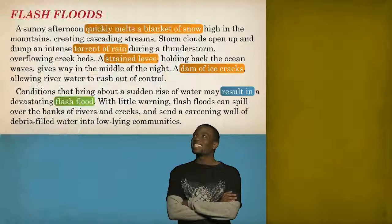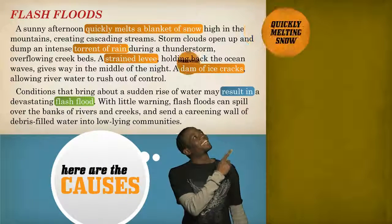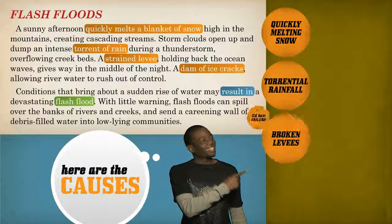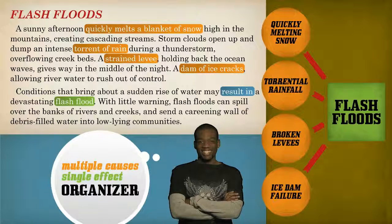My graphic organizer of this passage's text structure would look like this. Here are the causes, and here's the effect. Because there are multiple causes that result in a single effect, I use a multiple causes, single effect organizer.